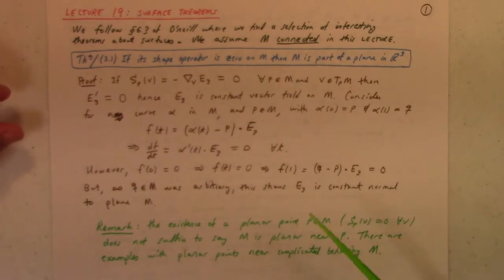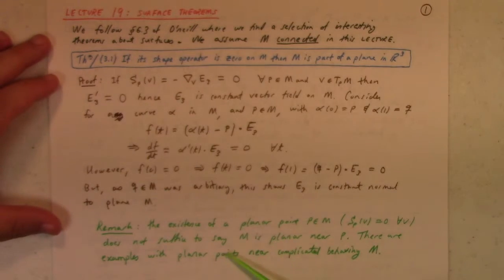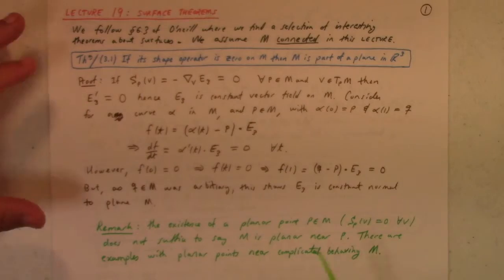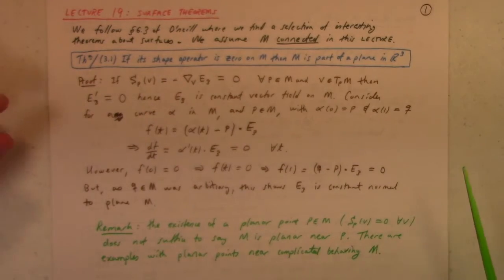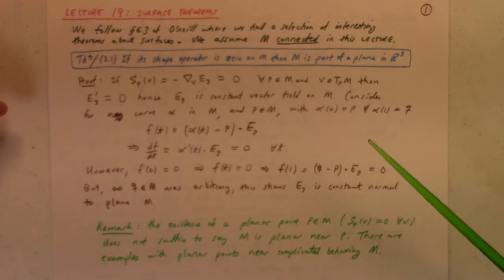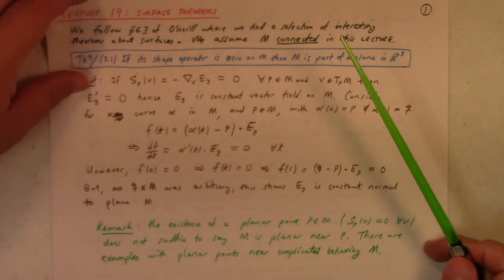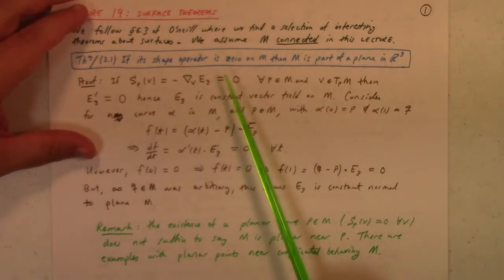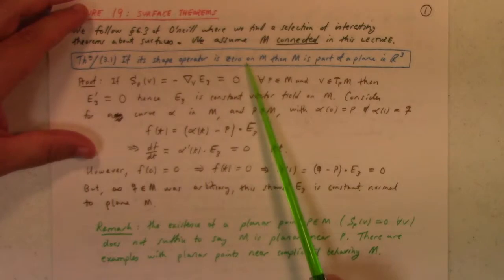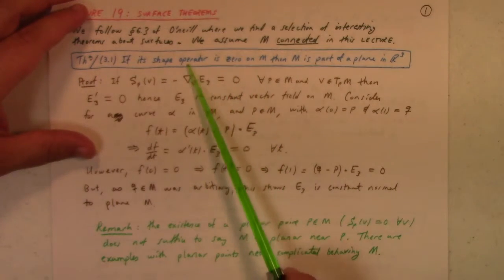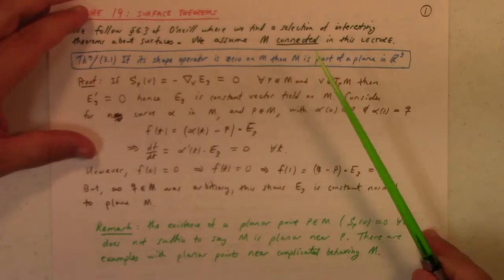So the existence, by the way, of a planar point does not suffice to say that m is planar near p. Remember, we had some weird examples before, like the cubic one. It was like z is equal to x times x minus the square root of 3 times y, parentheses times x plus the square root of 3 times y, something like that. It had these six different regions, hills and valleys, all kinds of crazy stuff going on close to the point where it's planar. But if you have that the shape operator is zero on m, then that's enough.